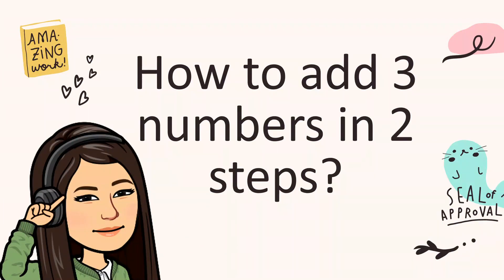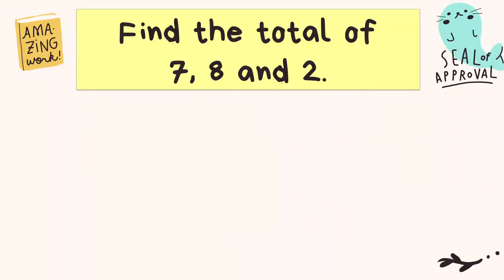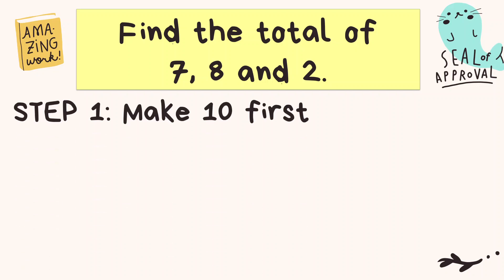How to add three numbers in two steps? Let's say this is the question: Find the total of seven, eight, and two. So what's the first step? The first step is to make ten first.